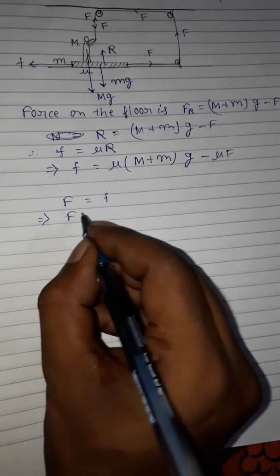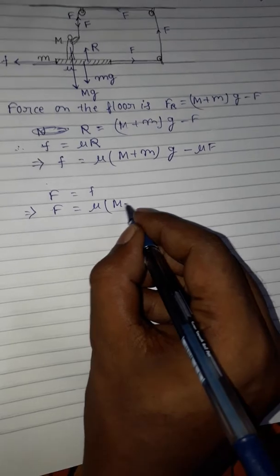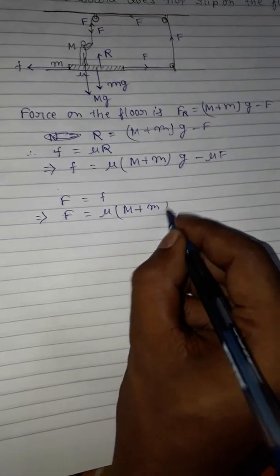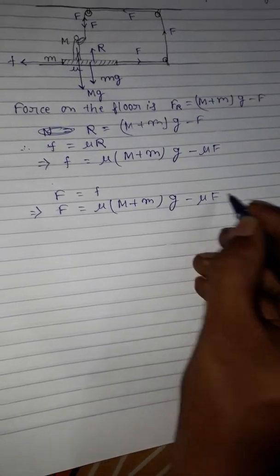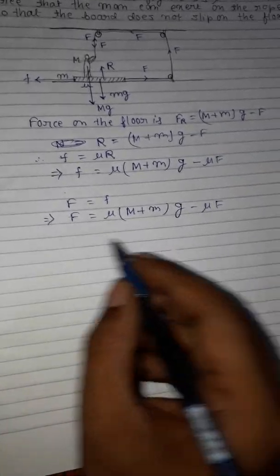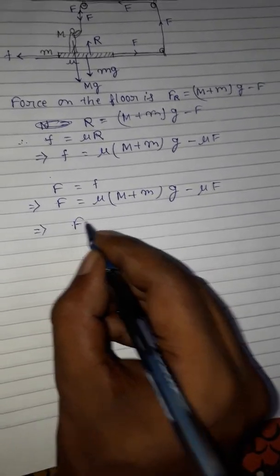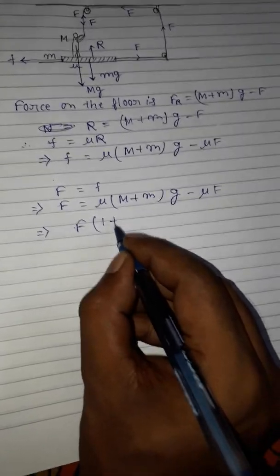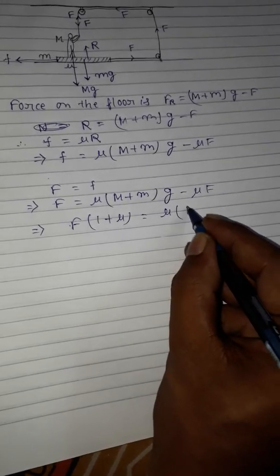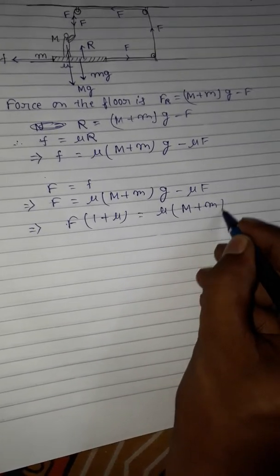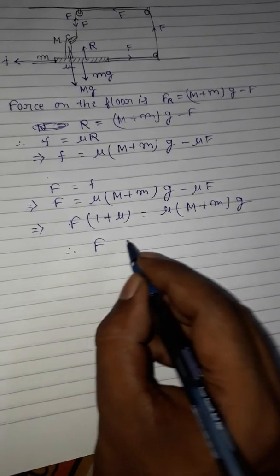F equals μ(M + m)g minus μF, which gives F(1 + μ) equals μ(M + m)g.